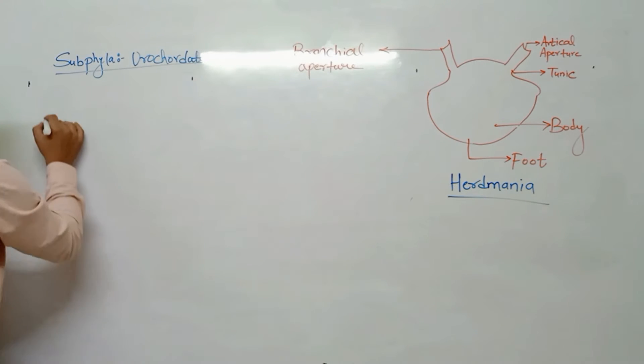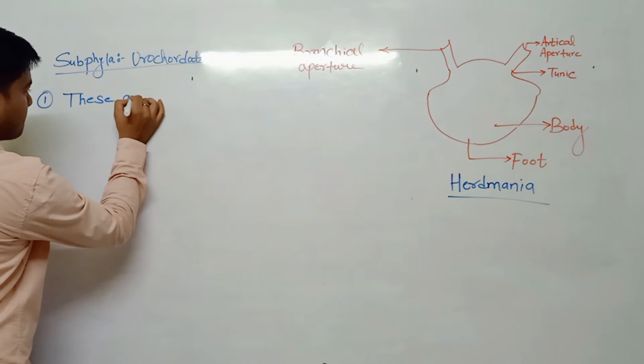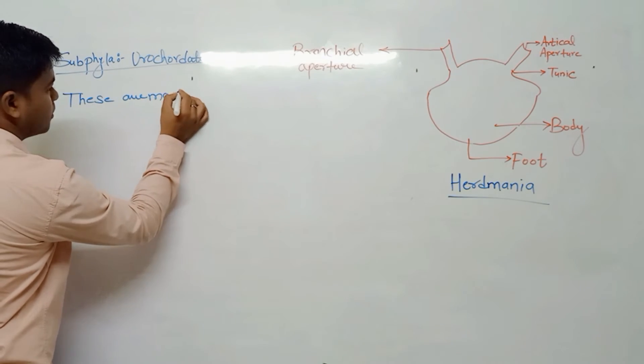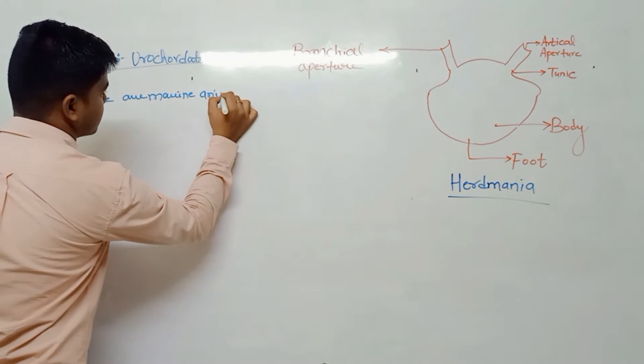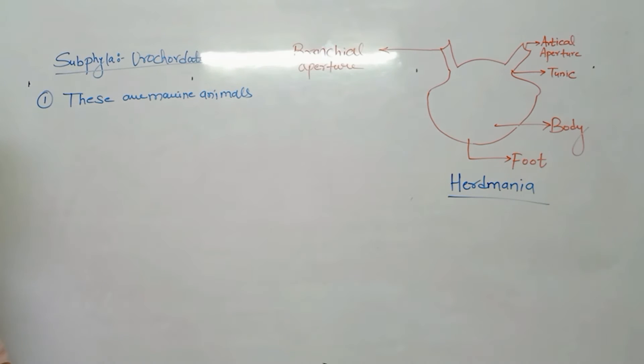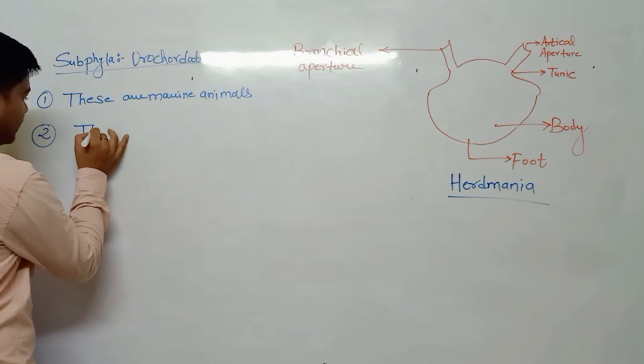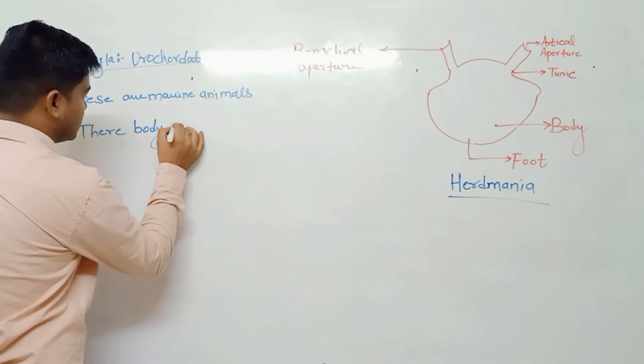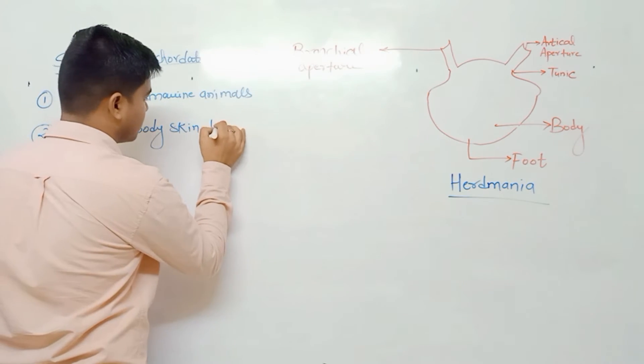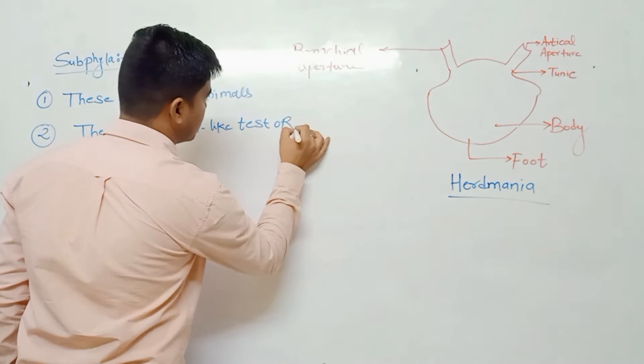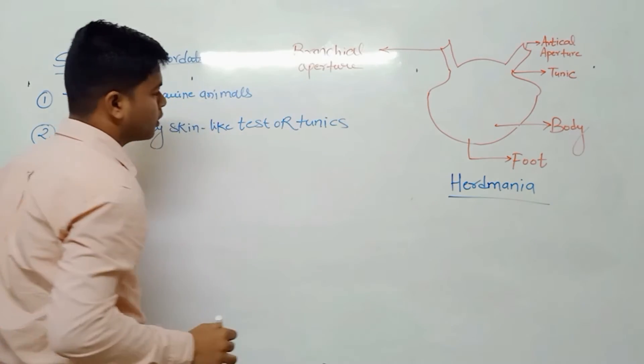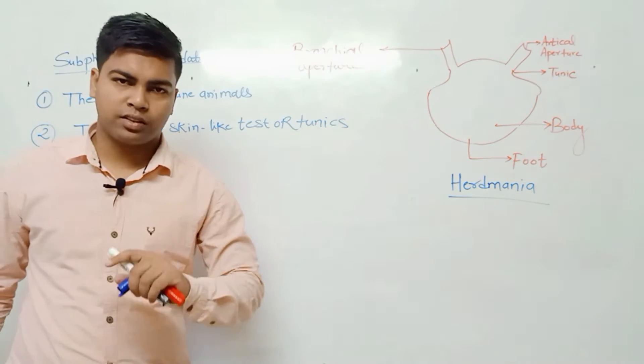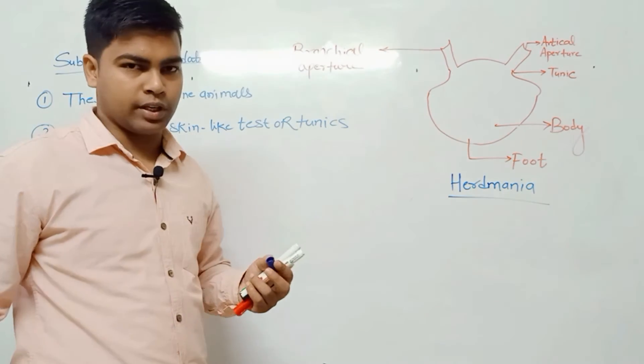First character is these are marine animals. Their body skin is like test or tunics, so these animals are also called tunicates.